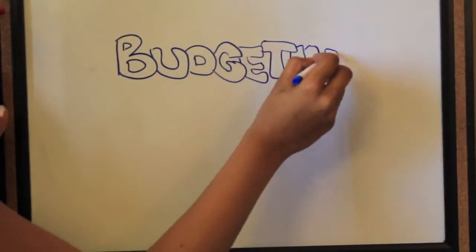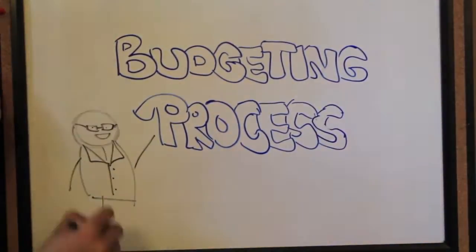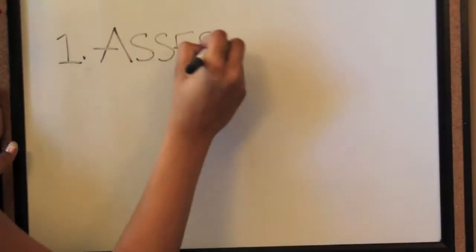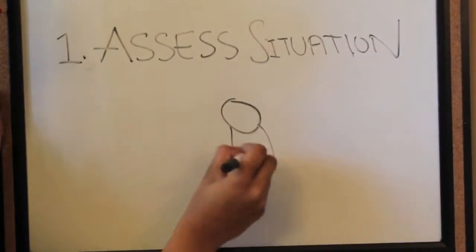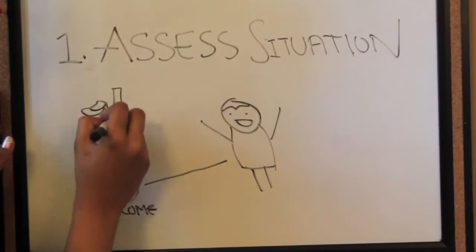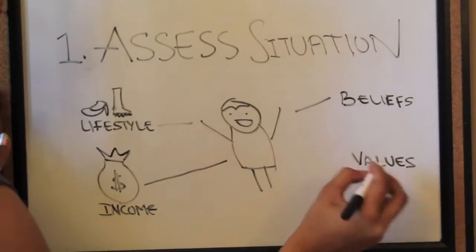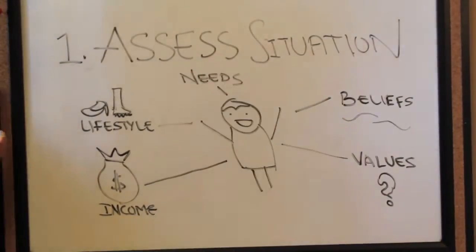Budgeting is basically balancing out your expenses with your income and accommodating for savings. But how do I do all of this balancing stuff? Well, Jack, let's talk about the budgeting process. First, you need to assess your situation. You need to look at your income, your lifestyle, your beliefs, your values, and most importantly, your needs.